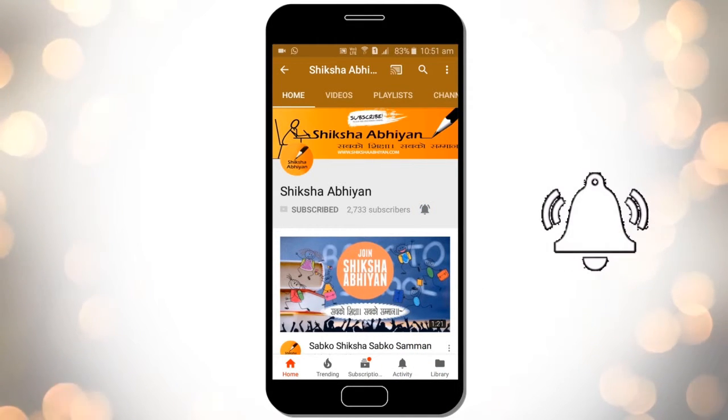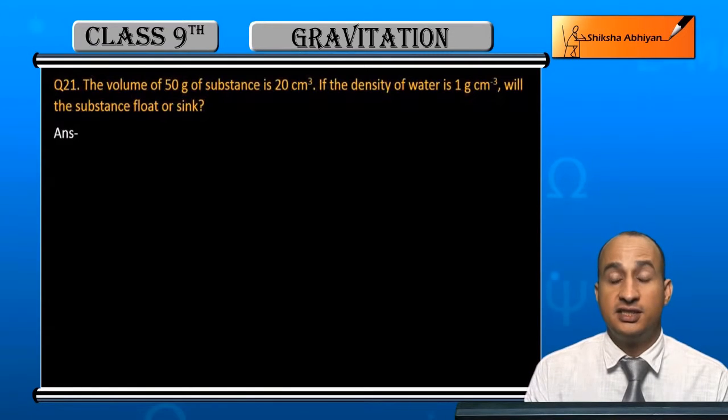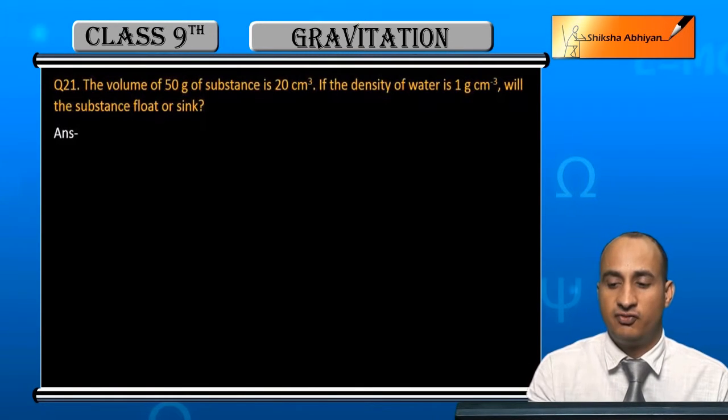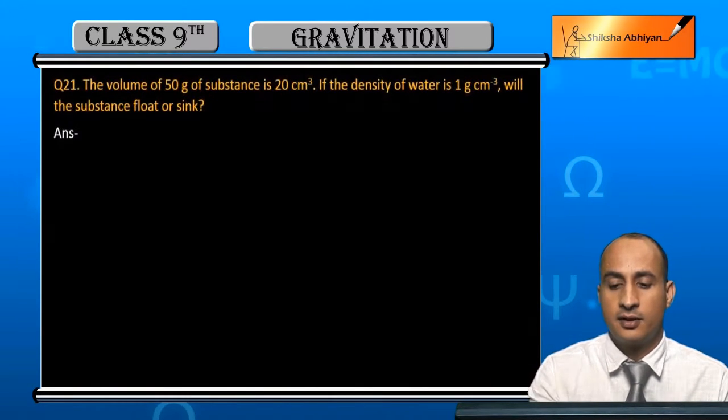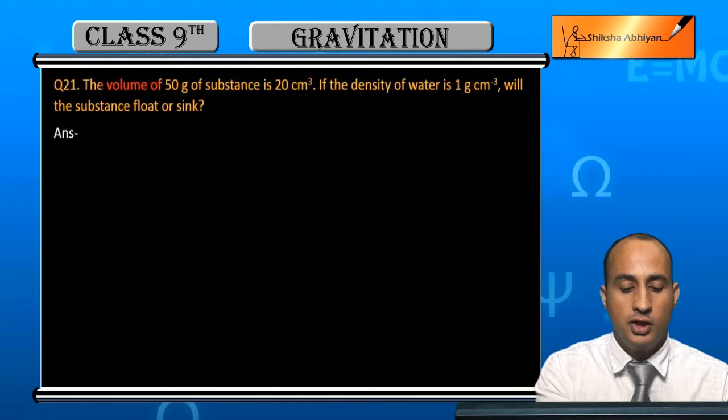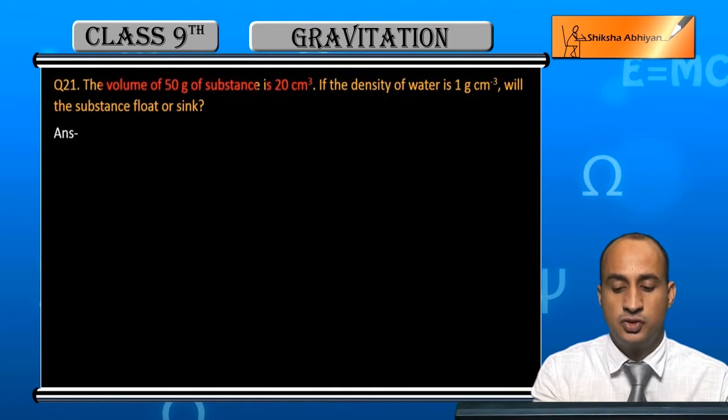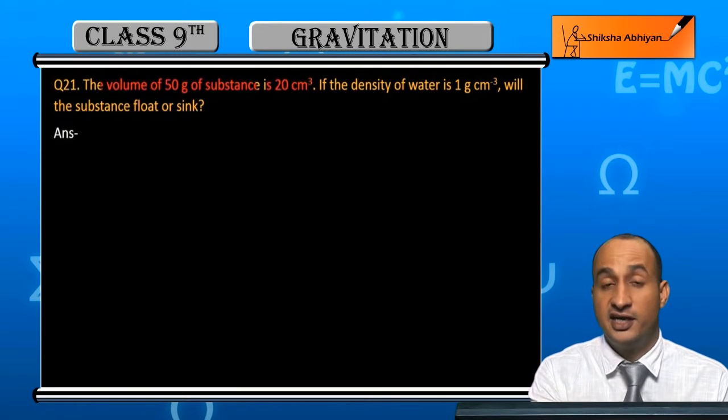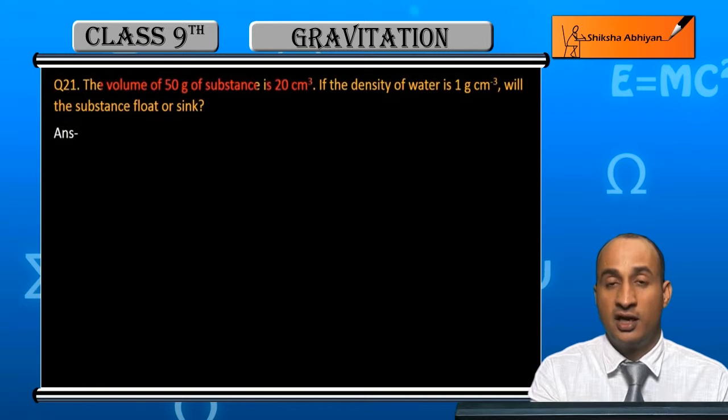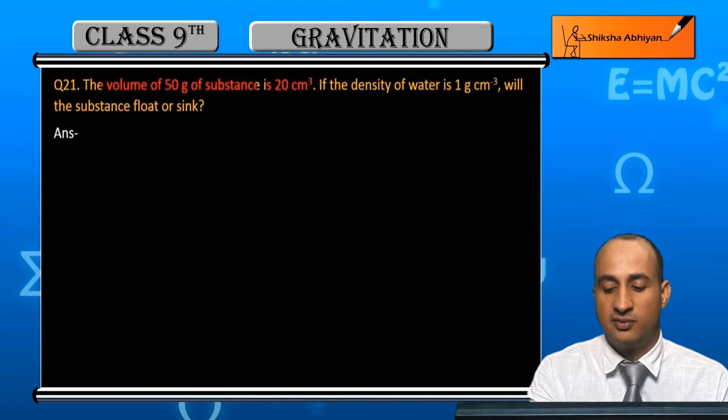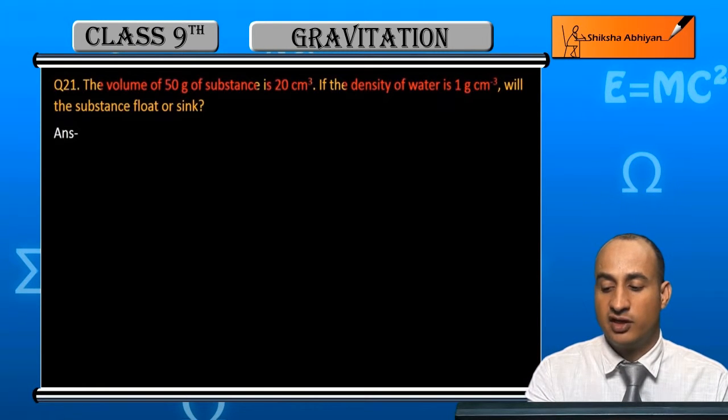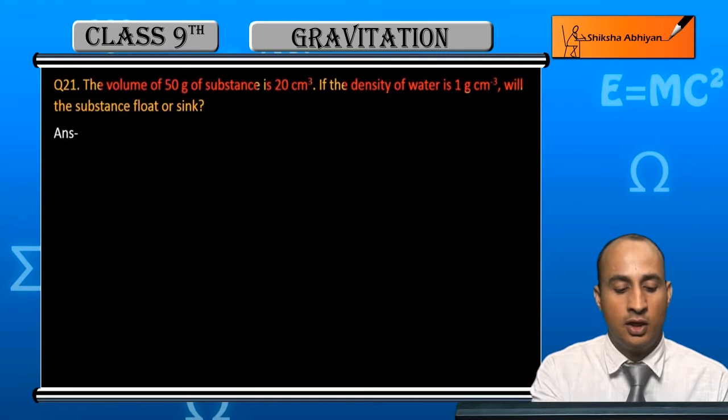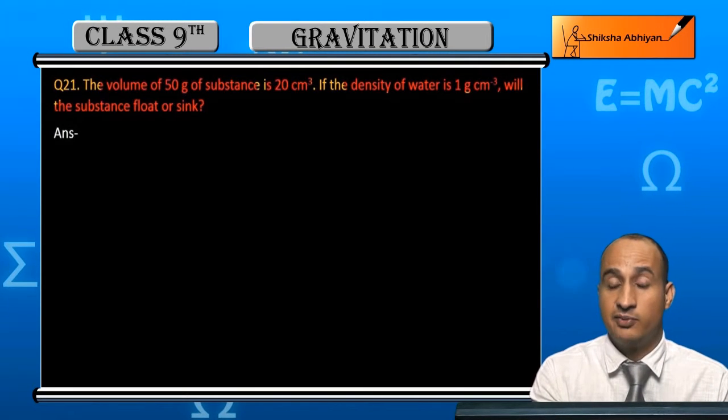Now students, see the 21st question. The question is: the volume of 500 gram of a substance is 20 centimeter cube. If the density of water is 1 gram per centimeter cube, will the substance float or sink in water?